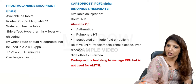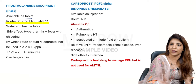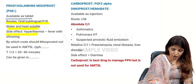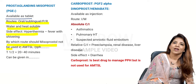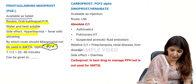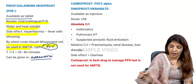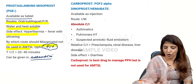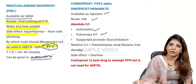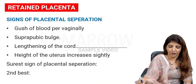Misoprostol (PGE1) is available in tablet form and can be given orally, sublingually, or rectally. It is water-soluble and heat-stable. Its main side effect is dose-related hyperthermia — fever and shivering. Do not use it per vaginally as the drug can be washed off during excessive bleeding. T-half is 20 to 40 minutes. It can be given to asthmatics. Carboprost (PGF2 alpha), also called dinoprost or Hemabate, is given intramuscularly. It is absolutely contraindicated in asthmatics, pulmonary hypertension, and suspected amniotic fluid embolism. Its side effect is diarrhea. It is the best drug to manage PPH but is not used for AMTSL.